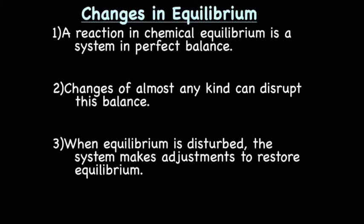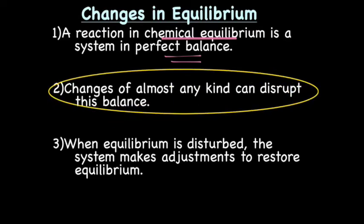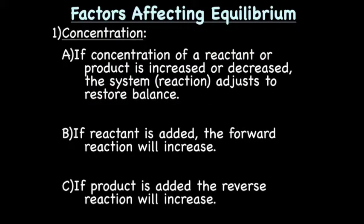Changes in equilibrium — the point of the lecture. A reaction in chemical equilibrium is in perfect balance. However, changes of almost any kind can disrupt this balance. When equilibrium is disturbed, the system — meaning the reaction — makes adjustments to restore equilibrium, to get things back in perfect balance. We're going to spend the rest of the lecture talking about factors that can affect equilibrium — how we can change this perfect balance to make more product or more reactant. The first factor is concentration.